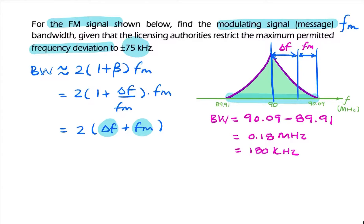So my 180 kilohertz is twice delta F plus FM. Delta F, I'm given in the question, is 75. So I have FM equals 90 minus 75 equals 15 kilohertz. So I've just found the message frequency.